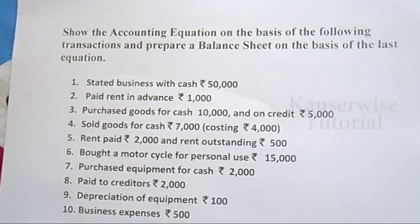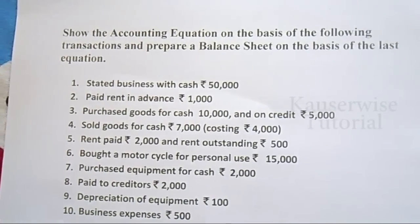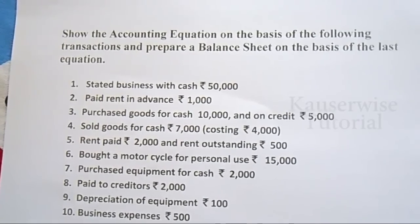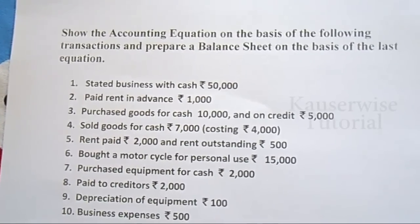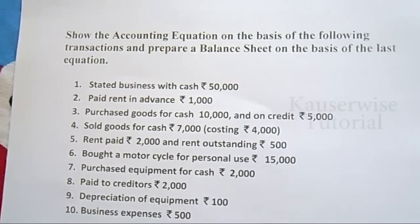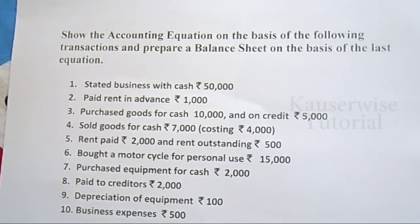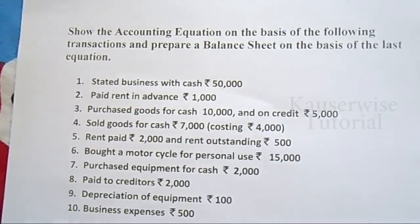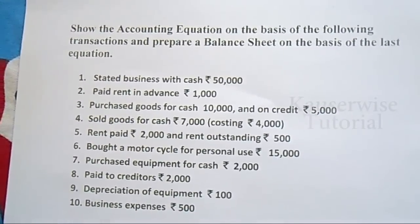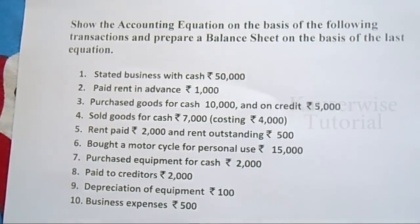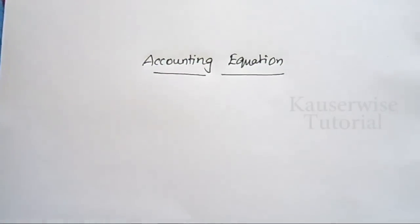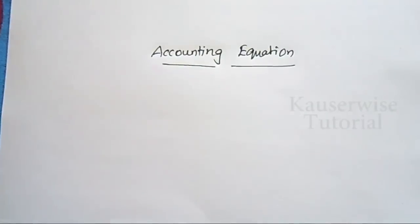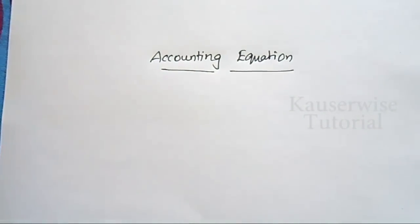Without recording debit and credit, you cannot make any entry in the journal book. Now I am going to explain the accounting equation, how it is going to appear and how it is going to affect all the transactions. I am going to explain with an example. But before that, let me explain the simple concept of accounting equation. Accounting equation emphasizes on the fact that every transaction has two sides of effect.